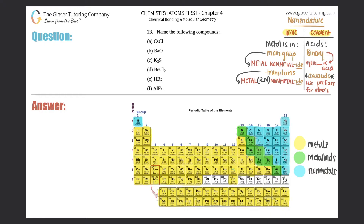Number 23: name the following compounds. This is going to be the first question out of many in which we're talking about how to name both ionic and covalent compounds. There's a lot to memorize here and we have parts a through f, so hopefully in these ten or so questions we can get down the rules for how to name compounds. Let's get started.